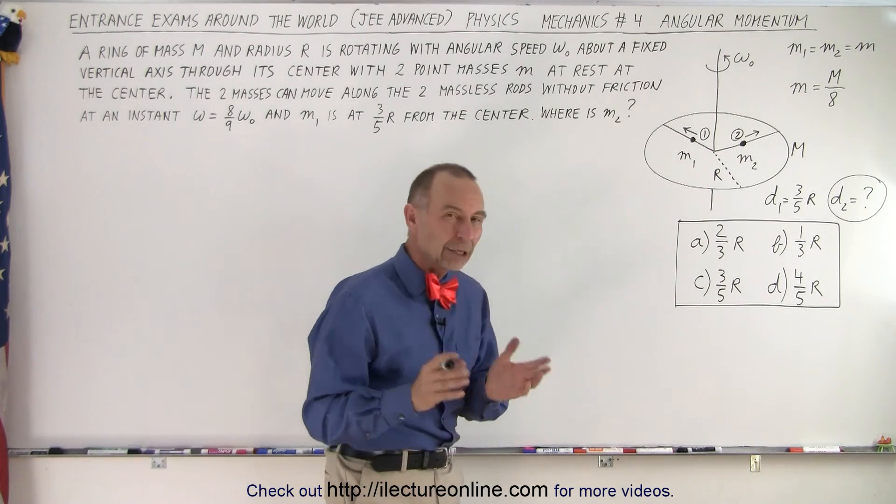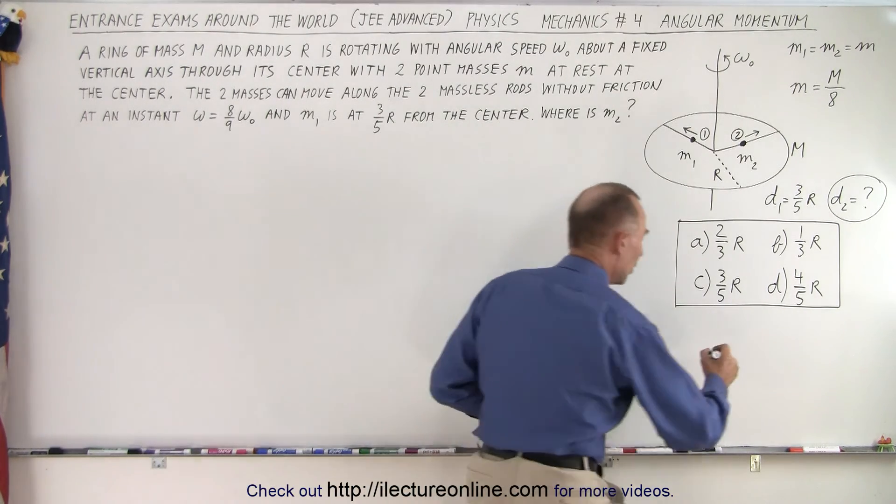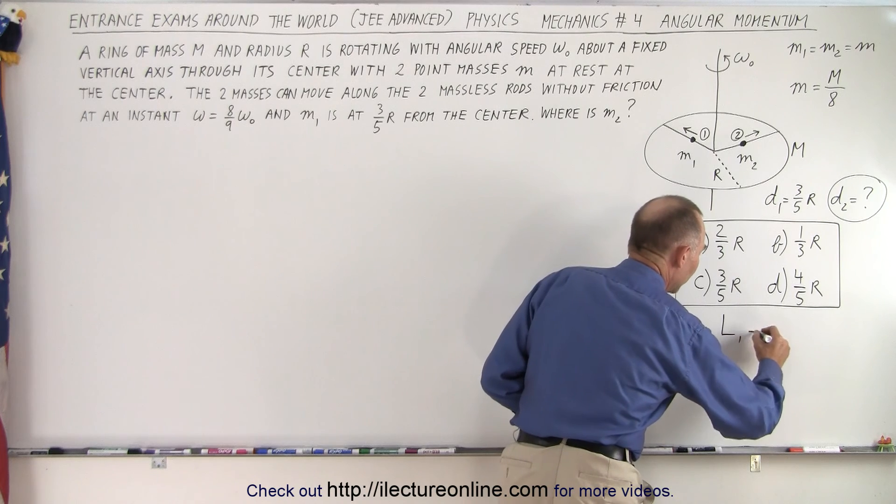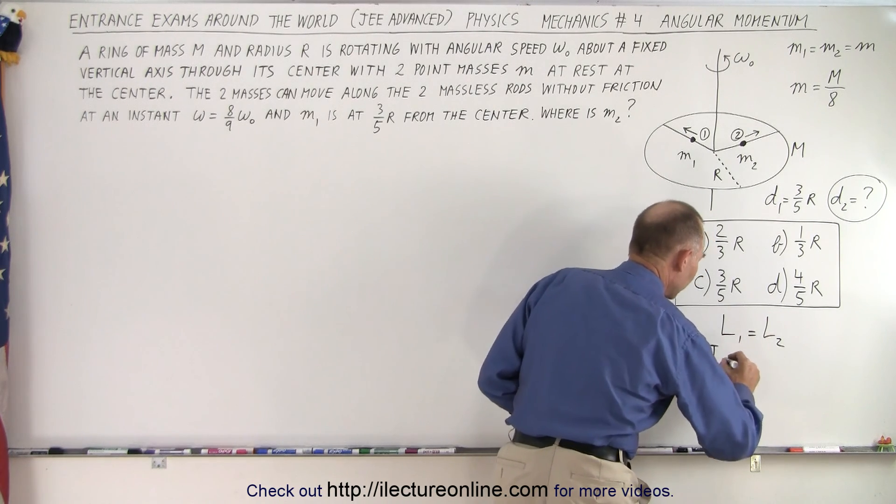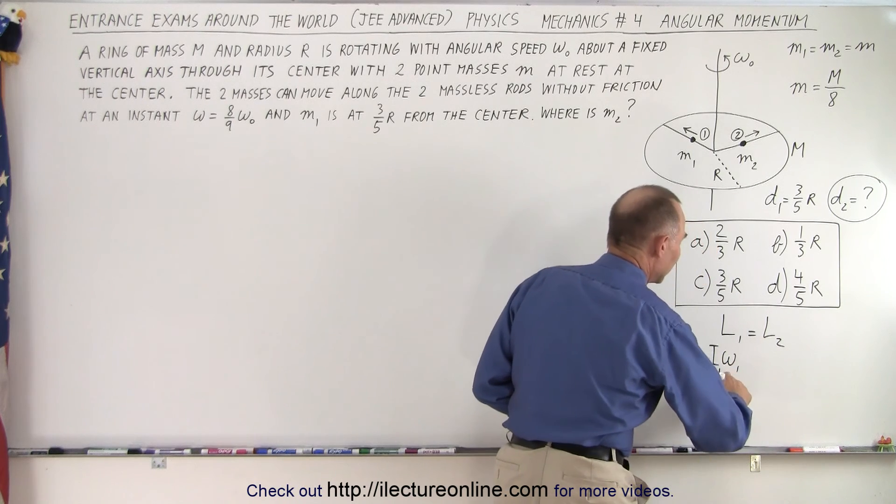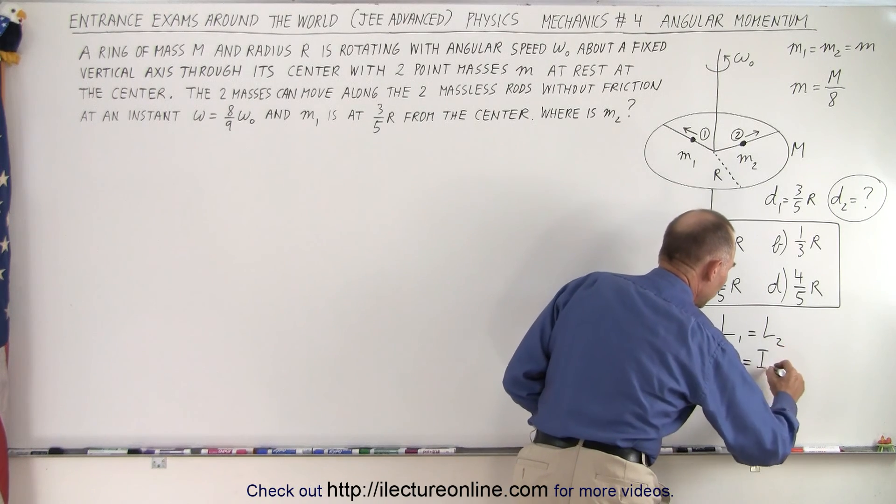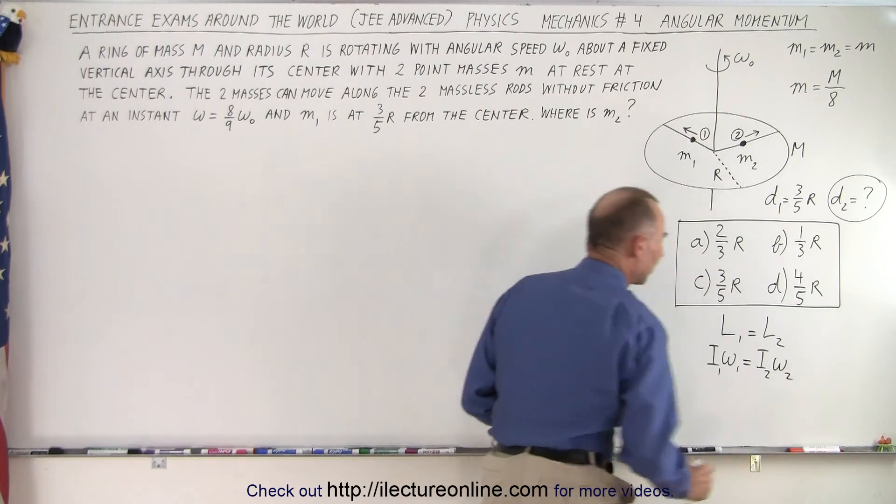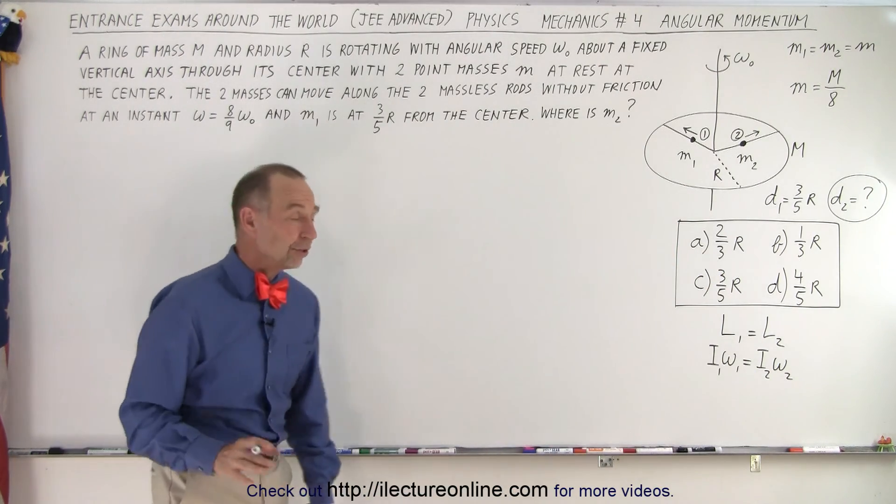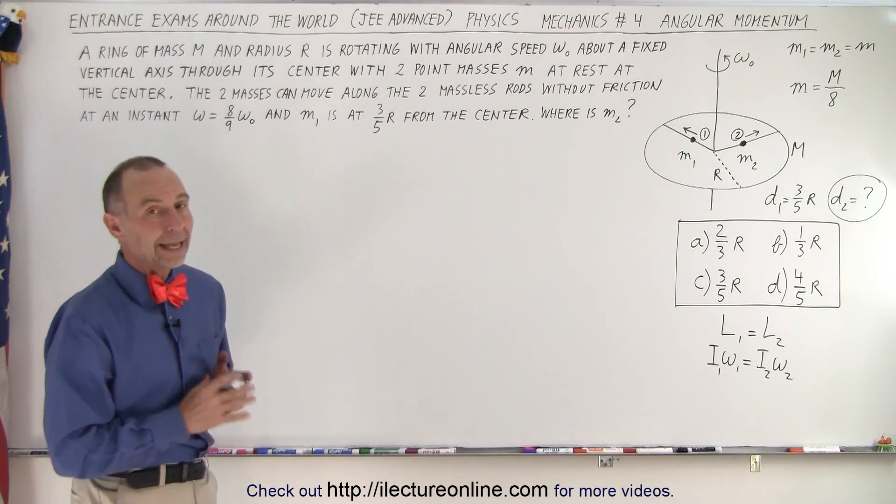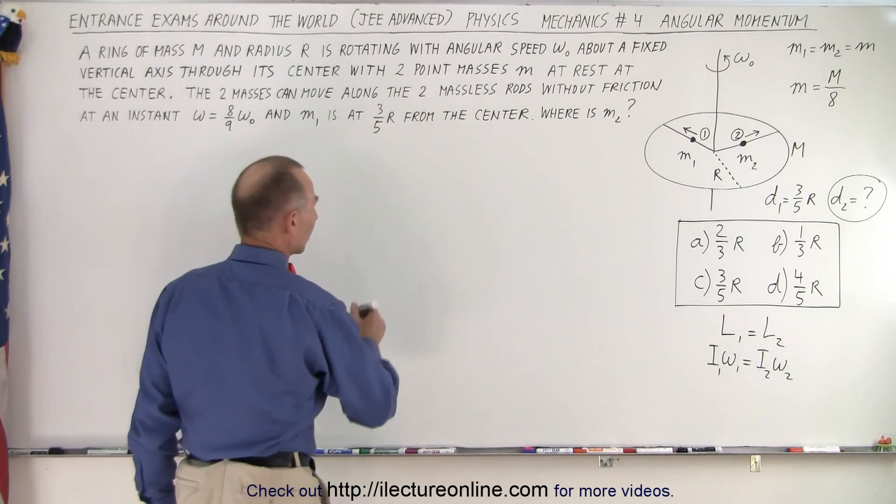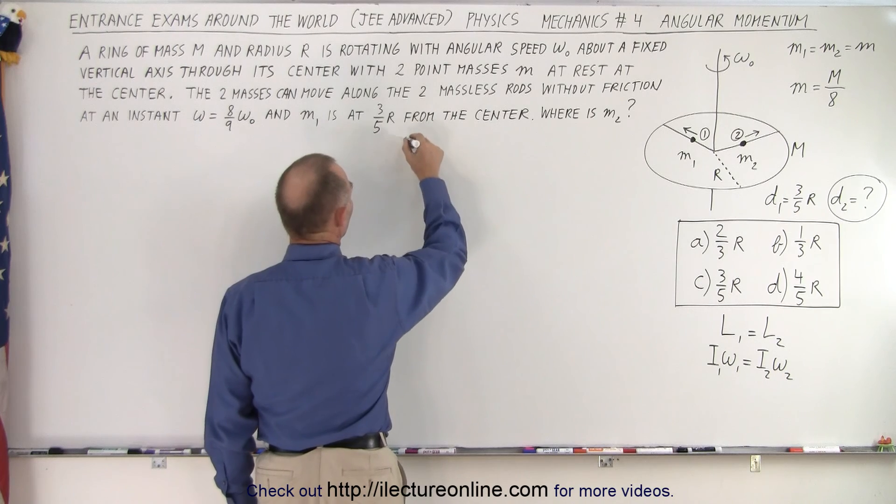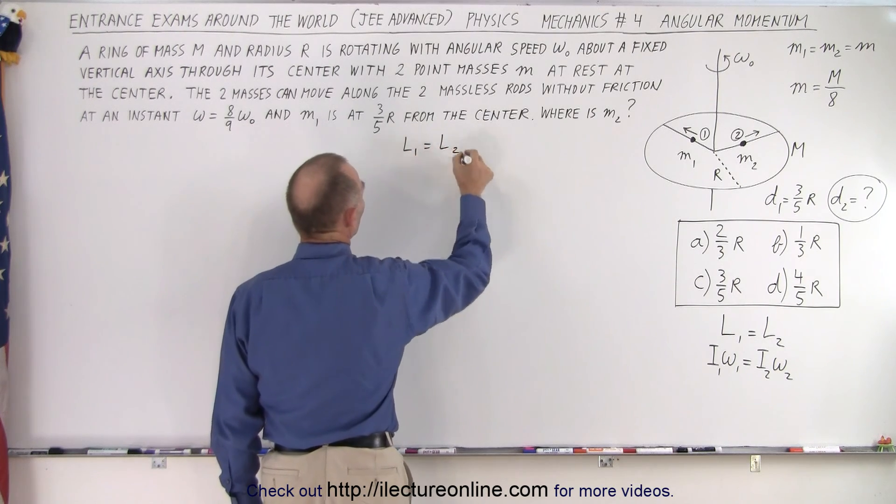But let's work it out systematically to see if that's indeed the case. This is a question regarding the conservation of angular momentum, which means that L1 must equal L2, and L is equal to the product of the moment of inertia times the angular velocity. So starting out with L1 equals L2...